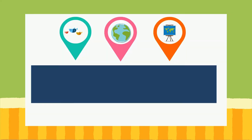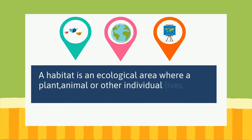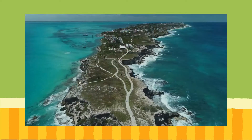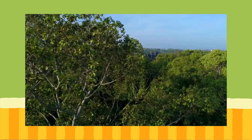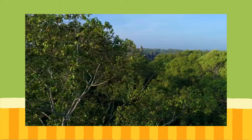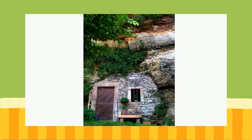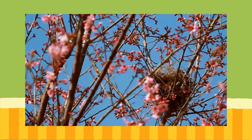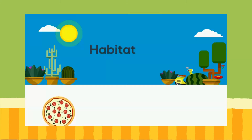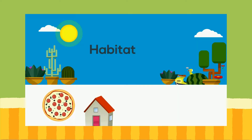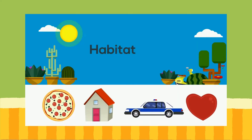A habitat is an ecological area where a plant or animal lives. It may be an island, a tree, or maybe even under a rock. This habitat is where an individual can find food, shelter, protection, or even mates.